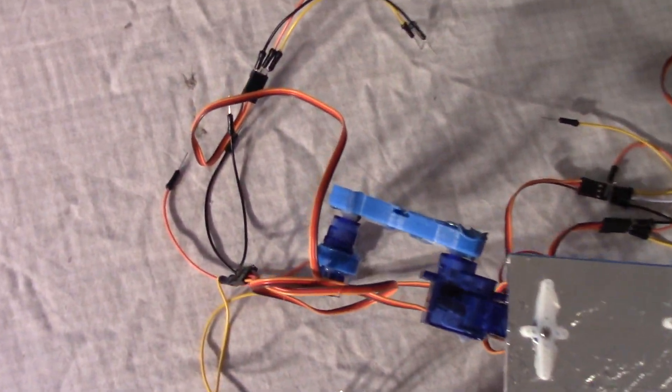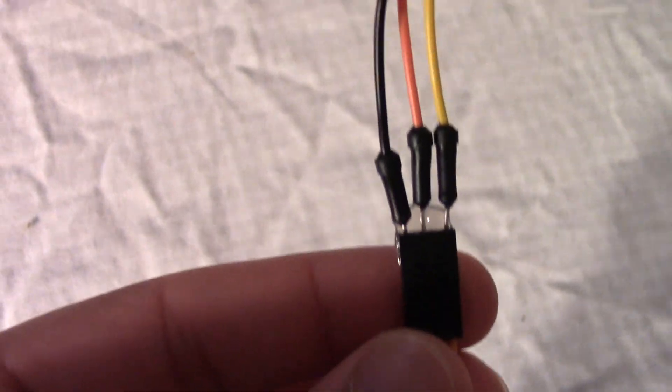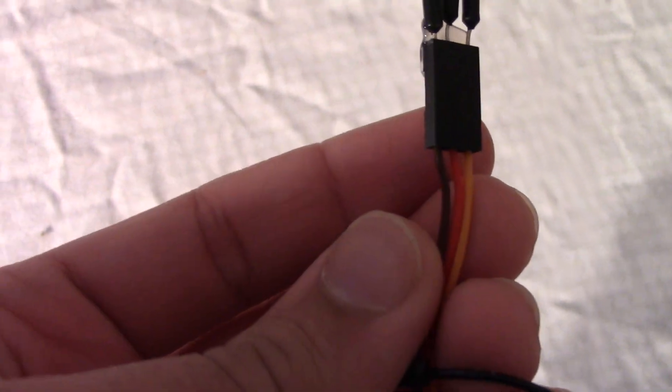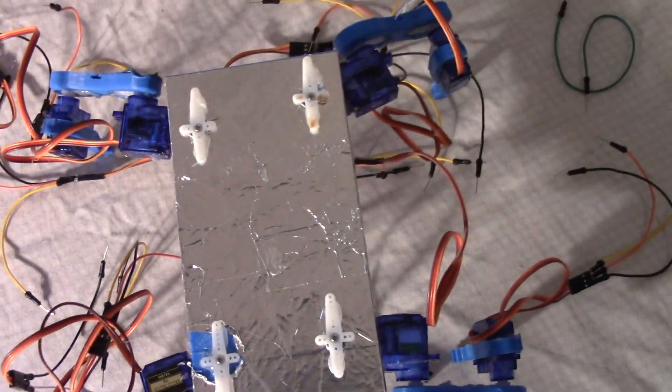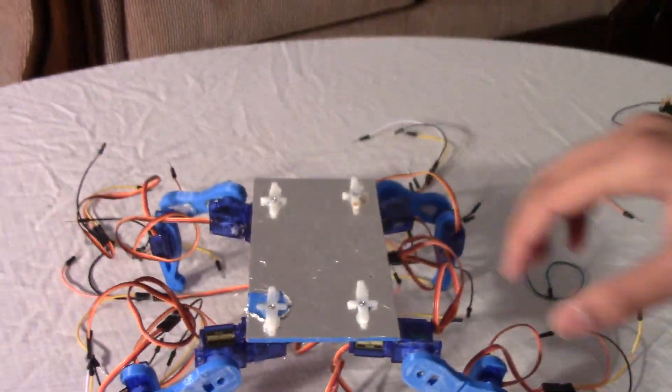So here's how your robot should look after you extended all the wires. Black, orange and yellow matches with brown, orange and yellow. We did that for all the other 12 servos. And here we are moving to the next step.